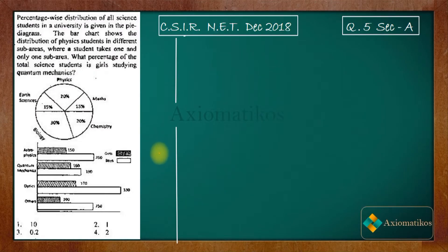Hello dear students, welcome to ExeoMaticos. This video is part of the solution series for CSIR NET December 2018 and we are doing problem 5 of section A. This problem is a problem of general aptitude. Let us have a look.